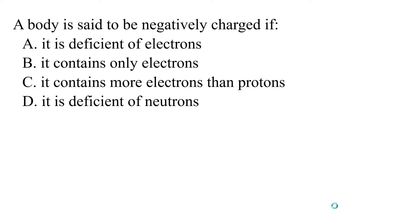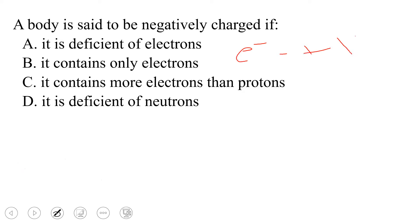The options are: A, if it is deficient of electrons; B, if it contains only electrons; C, if it contains more electrons than protons; and D, if it is deficient of neutrons. So let's quickly remind ourselves — electrons are negatively charged, they carry negative charges. Protons carry positive charges. Neutrons are neutral.